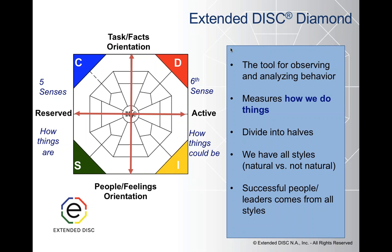Then you divide the left side from the right side. The C styles and the S styles are what we call the reserved behavioral styles — naturally more reserved, preferring how things are, working in the past and the present. They also rely on their five senses, wanting as much information as possible before making decisions, and they tend to be slower in making decisions but get it right the first time. The active styles — D's and I's — are more focused on the future, constantly changing, moving forward, relying more on gut instinct, the sixth sense.